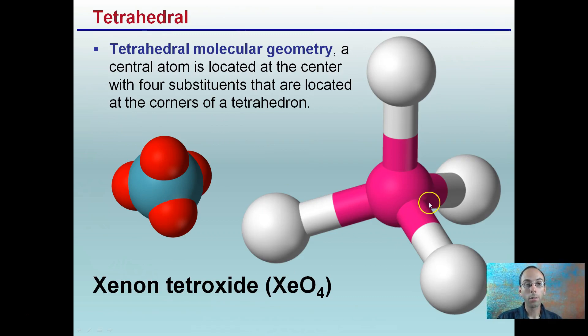Moving on, tetrahedral. A tetrahedral molecular geometry is a central atom located at center with four substituents that are located at the corners of the tetrahedron. So this tetrahedral, tetra meaning four. Well, if we count them, one, two, three, four, which is four here binding. Xenon tetraoxide here. So this is an example of a tetrahedral molecule.